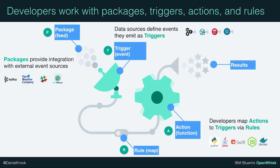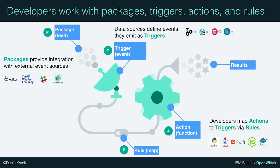OpenWhisk offers the developer a straightforward programming model based on packages, triggers, actions, and rules. Packages provide event feeds, triggers fire when those event feeds initiate an event, and developers map actions or functions to those triggers using rules. Anyone can create a new package for others to use, and developers can write their actions in any language. OpenWhisk has first-class support for JavaScript, Java, Python, and Swift, but any SDK can be packaged as a Docker image and run as an action.